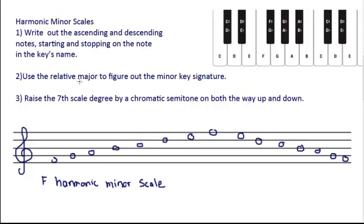Having written out the notes from F, ascending to F and back down, we can go on to step 2, which is to use the relative major to figure out the minor key. So going from an F, we can go up three semitones and two note names in order to figure out the relative major. We end up on an A-flat, so that means A-flat major is the relative major key.